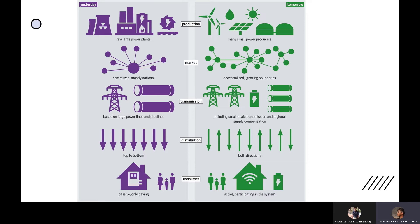But now the power is generated from renewables and they are also added up with the grid. The market is deregulated, which brings a lot of competition, innovation and many new policies into the power system. Instead of long transmission lines, it suggests distributed generation. This system is bilateral where consumers are also active participants in the system.